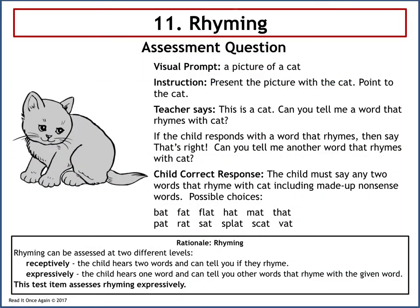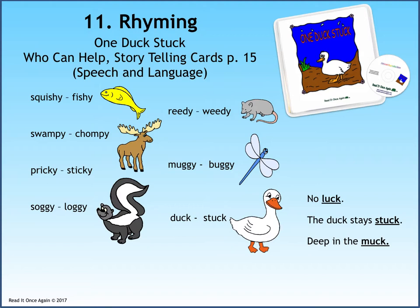The rhyming assessment question should be scored. The visual prompt is a picture of a cat. The teacher says: This is a cat. Can you tell me a word that rhymes with cat? If the child responds correctly, the teacher asks: Can you tell me another word that rhymes with cat? The child must say two words that rhyme with cat, including made-up nonsense words. Some possible choices are bat, fat, hat, mat, pat, rat, sat, splat, or scat. The rationale: rhyming can be assessed receptively, where the child hears two words and tells you if they rhyme, or expressively, where the child hears one word and produces other rhyming words. This test item assesses rhyming expressively.